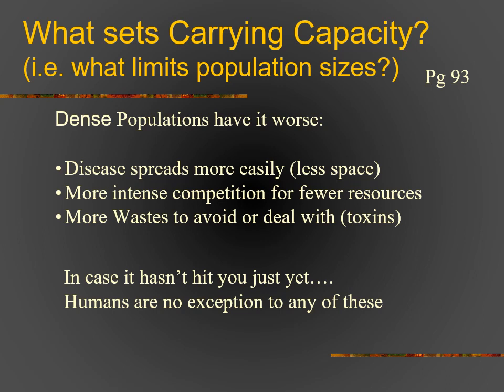Some populations are going to have it worse — populations where there are more individuals that are denser tend to face additional limits. Disease tends to spread more easily in dense populations, there's less space, and this is what we call a density-dependent limit. There's also more intense competition for fewer resources, and more waste to deal with — toxins build up. These are all density-dependent factors. By contrast, things like natural disasters are density-independent, meaning population size plays no role in whether they have an impact.